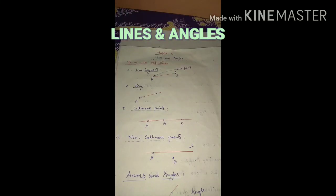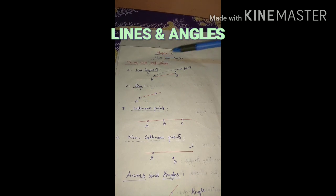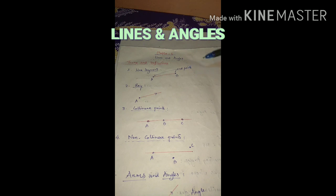Good morning students. Today we start chapter number six. We have already done chapters one and two, so three chapters are left, and then we move to chapter six. This chapter is very familiar to you because the heading is 'Lines and Angles' — you covered this in class seven and class eight. So I think you will feel more comfortable learning this chapter online.